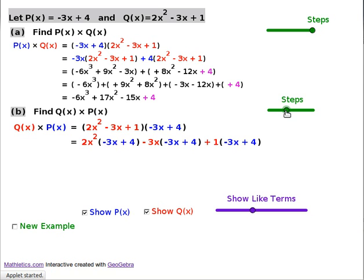When you expand the first step, you write each term in this bracket multiplied by all the terms in the second bracket. You've got 2x squared multiplied by all of P of x, minus 3x multiplied by all of P of x, and plus 1 multiplied by all of P of x.